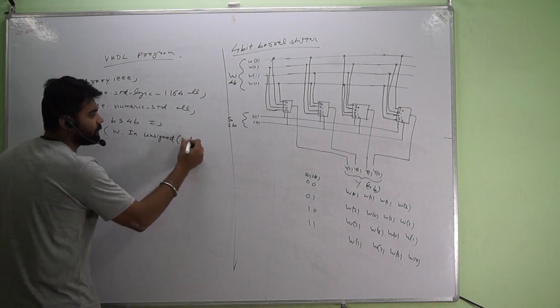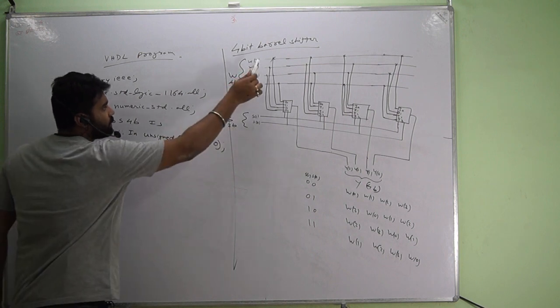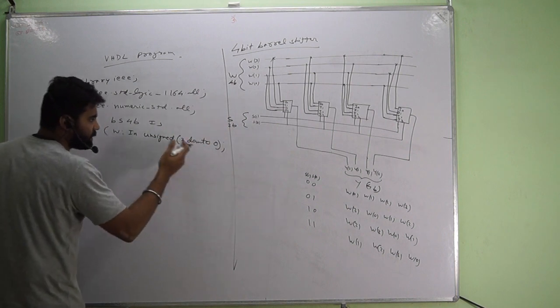Here, 3 down to 0. w3,w2,w1,w0 - it's a number, I'll utilize it as a number, so I'm grading it 3 down to 0.